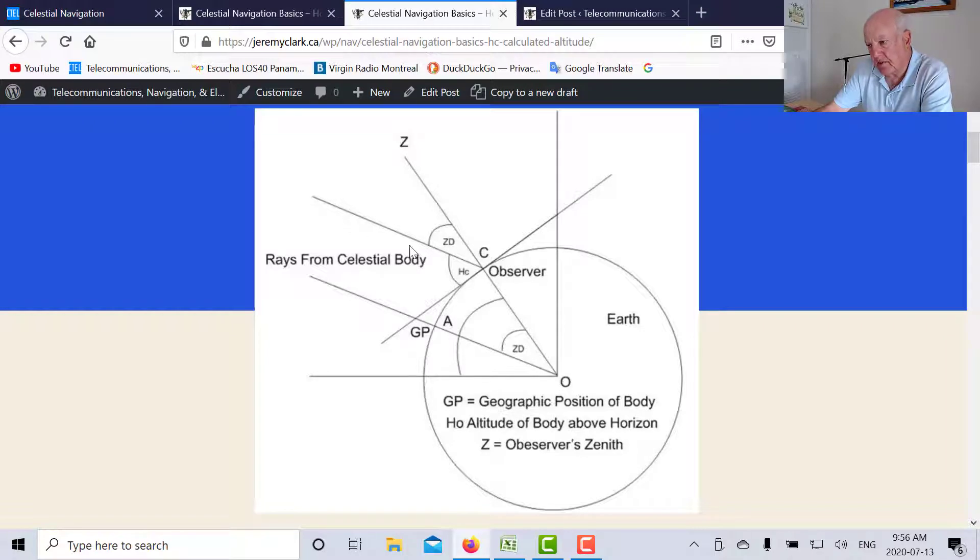So these are the light rays coming from the Sun, and we can see that this angle here is ZD, which is also equal to this angle ZD because this line is parallel to that line.